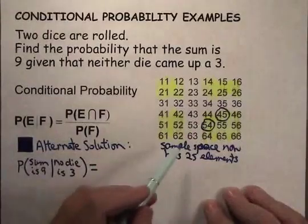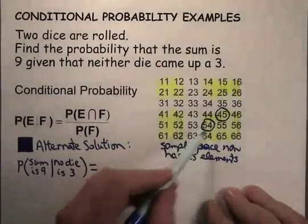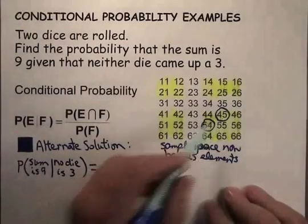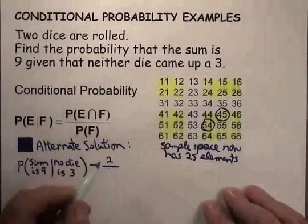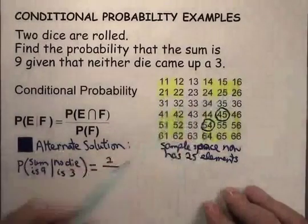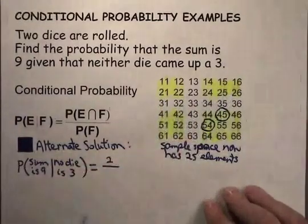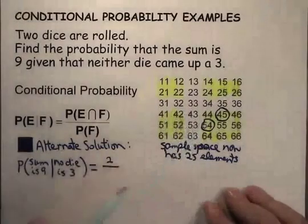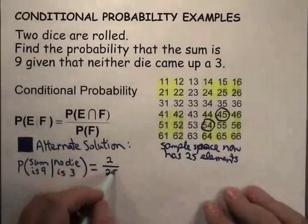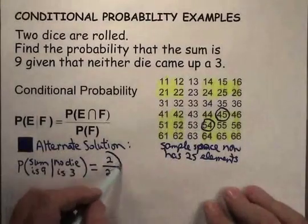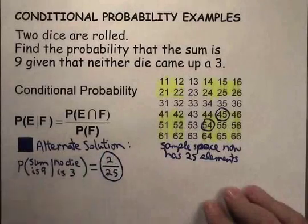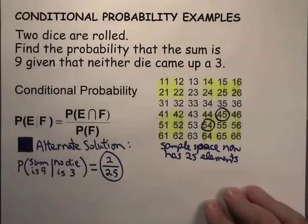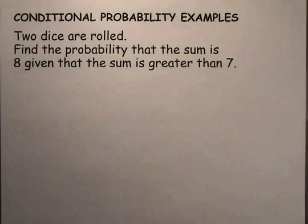That is 2 out of the 25 remaining elements in our sample space, and what you should notice is that's exactly the same answer we got before — just another way of looking at it. Sometimes that is instructive. Two dice are rolled; find the probability that...